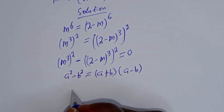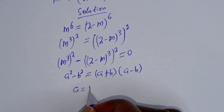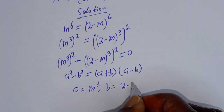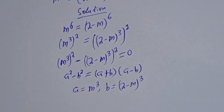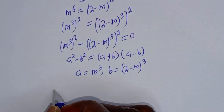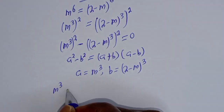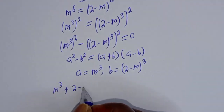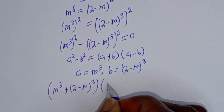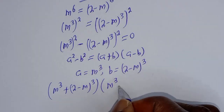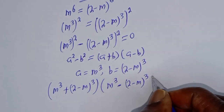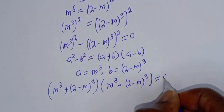Then from this equation, a is equal to m raised to power 3, and b is equal to 2 minus m raised to power 3. Substituting, we have m raised to power 3 plus 2 minus m raised to power 3, multiplied by m raised to power 3 minus 2 minus m raised to power 3, all equal to 0.